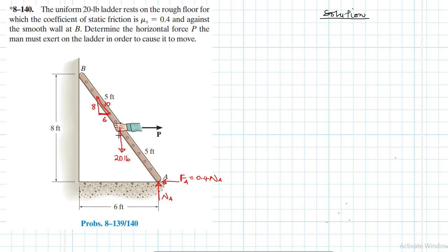At B, there is no friction, but there will be a normal force acting on the ladder. We call this NB. With the free body diagram complete, we now apply the equations of equilibrium.